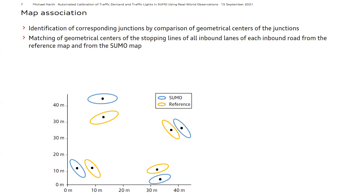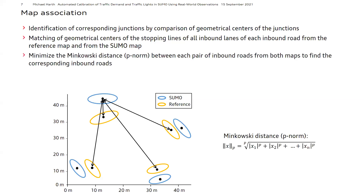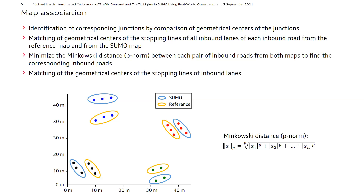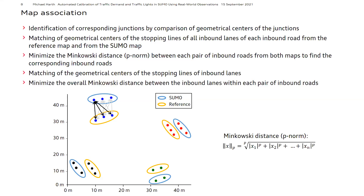In the first step, we aggregate the geometrical centers of all inbound lanes to match inbound roads between both maps. Matching is done by minimizing the Minkowski distance between each pair of inbound roads, yielding corresponding inbound roads shown by the same color. In the next step, inbound lanes among pairs of inbound roads are matched by comparing geometrical centers of stopping lines and minimizing the overall Minkowski distance, with corresponding inbound lanes shown by symbolic markers. As a result, we know which inbound lanes from the reference map belong to which inbound lanes in Sumo.